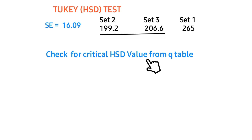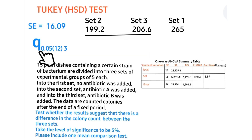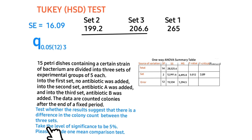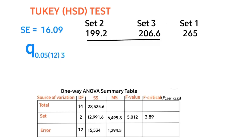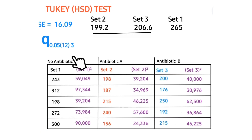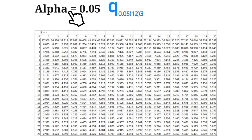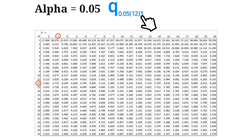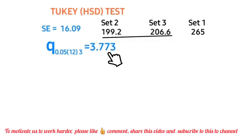Next, we check for the critical HSD value from the q-table. We look up q at α = 0.05, based on our significance level of 5%. From our one-way ANOVA table, the error degrees of freedom is 12, and we are working with three groups (Set 1, Set 2, Set 3). Tracing the q-table at α = 0.05, df = 12, and k = 3 groups, the q critical value is 3.773. We record this in our summary table.